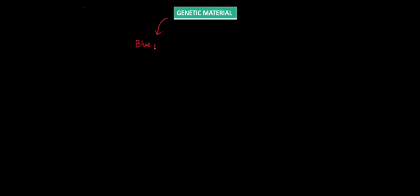So what is genetic material? Genetic material is a blueprint — we can say it is a blueprint, or we can say the controller. This genetic material carries information about the species, about anything. In fact, this genetic material is the one that gives every individual or every organism its identity. So it is very very important.